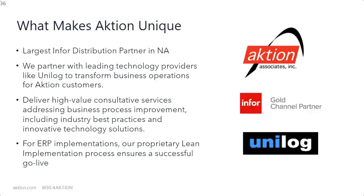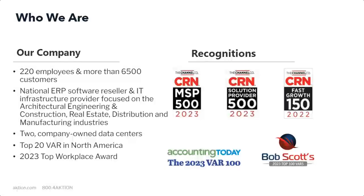A little bit about Action — what makes us unique. We're the largest Infor distribution partner in North America. We partner with leading technology providers like Unilog to transform business operations for Action customers, delivering high-value consultative services addressing business process improvements, including industry best practices and innovative technology solutions. For ERP implementations, our proprietary lean implementation process ensures a successful go-live. Our company has over 220 employees and more than 6,500 customers. We're a national ERP reseller and IT infrastructure provider focused on architectural engineering and construction, real estate, distribution, and manufacturing industries — two company-owned data centers, top 20 VAR in North America, and a 2023 Top Workplace Award.